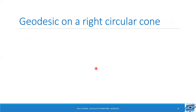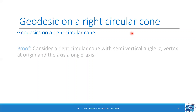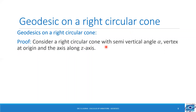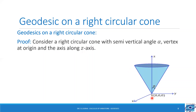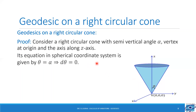Now let us move on to the geodesic on a right circular cone. We are required to find the geodesic on a right circular cone. For that, let us consider a right circular cone with semi-vertical angle alpha, vertex at the origin, and axis along the z-axis. The vertex is at the origin (0, 0, 0) and the semi-vertical angle is alpha. Therefore, the equation of the cone in the spherical coordinate system can be written as θ = α. Since θ = α, dθ = 0.